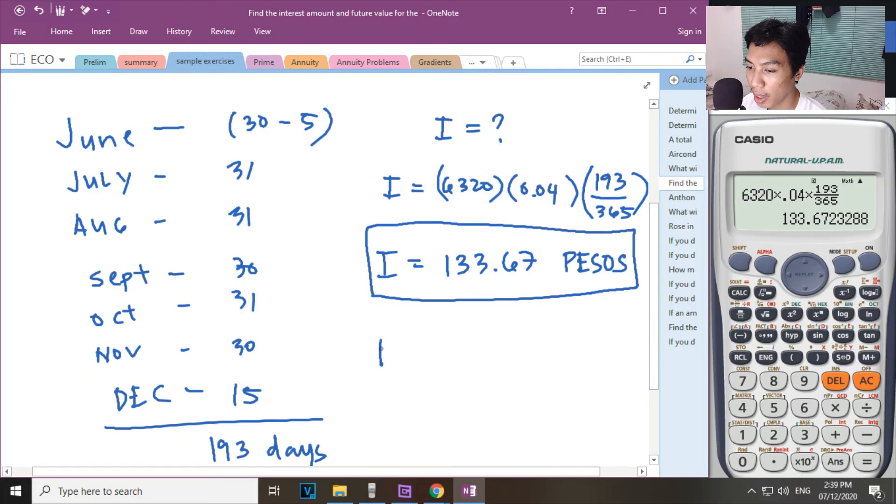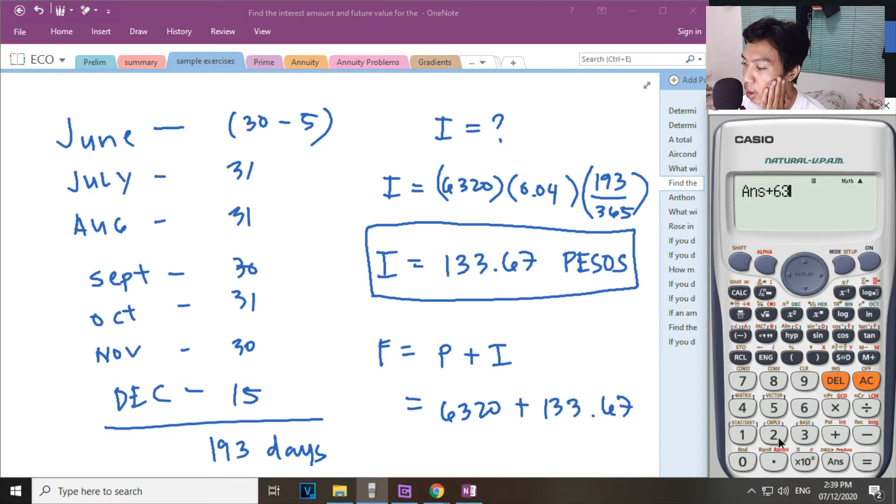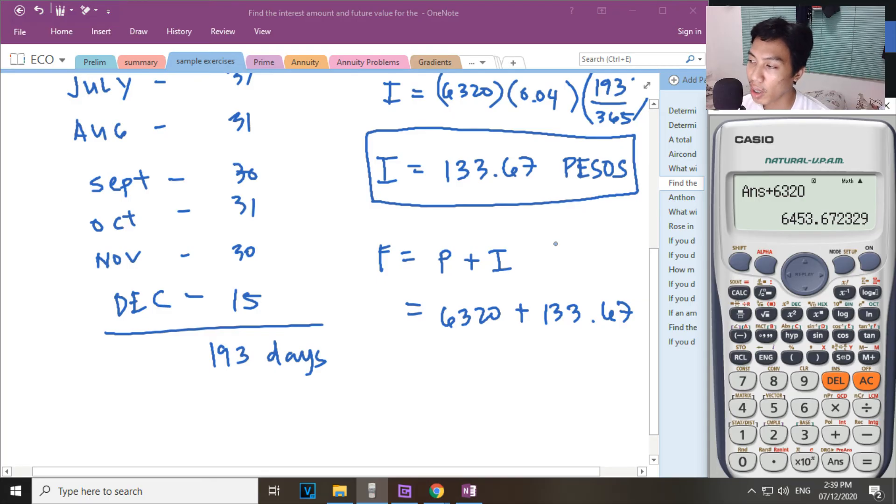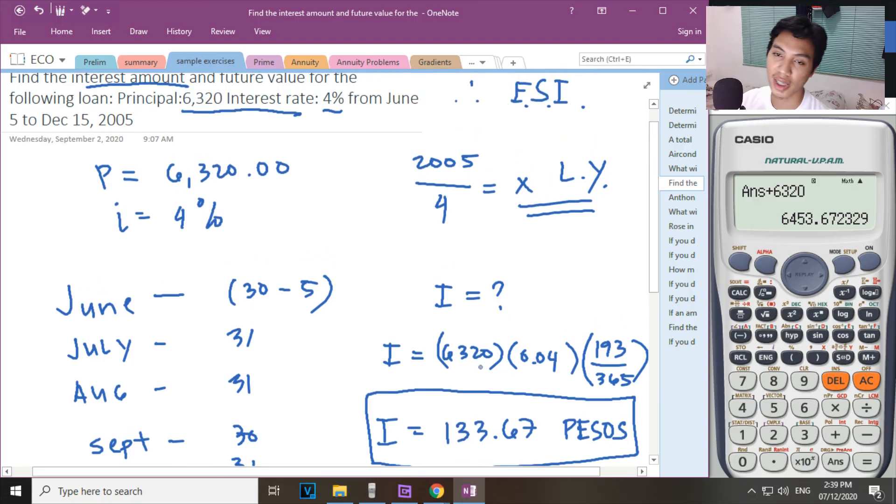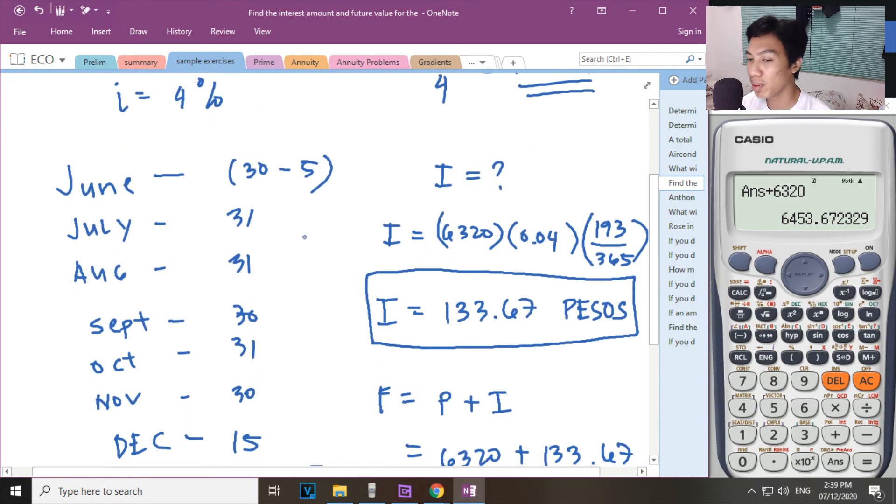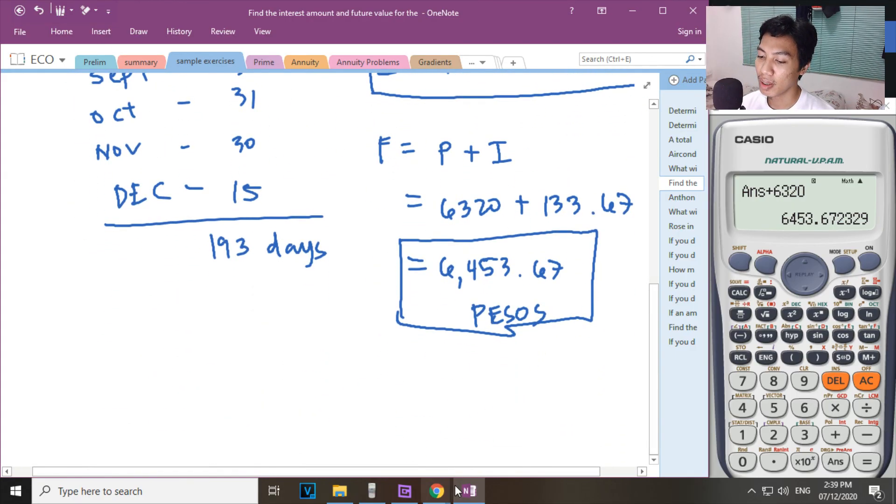So for the future worth, F. F will be equal to P plus I. So ano yung P mo? 6,320 plus 133.67. The answer will be 6,453.67 pesos. So that is for problem numbers 5 and 6. So that is the way you will solve it. Ilista mo yung araw tapos yung last day niya. Yan yun yun yung running rate niya. So let us take a 5 minute break.